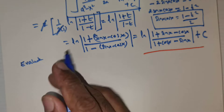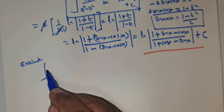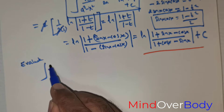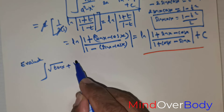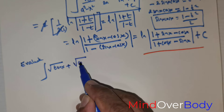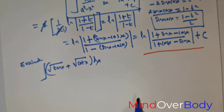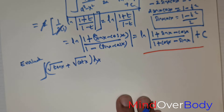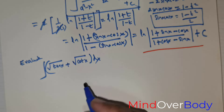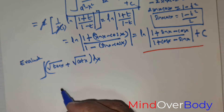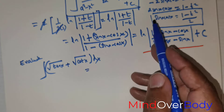The integral to evaluate is: the integral of √(tan x) + √(cot x) dx. This is a nice question — it looks simple, but if we adopt the usual method of substitution, it wouldn't be easy to solve. So I'm going to follow a specific technique.